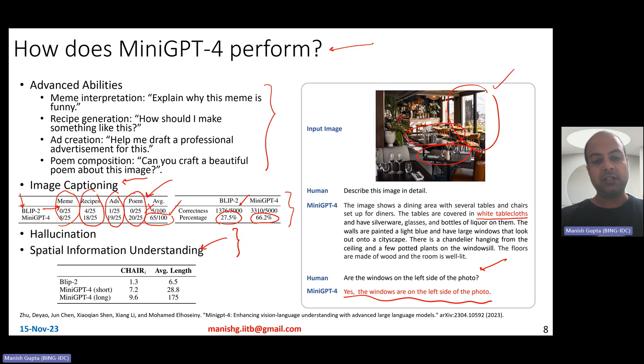In fact, they also tested hallucination across these Blip2 and mini GPT-4 models. Mini GPT-4 they tested for describing in short and describing in detail. And what you observe is that, yes, mini GPT-4 is notorious at having higher hallucination rates, especially when you ask it to generate longer captions.